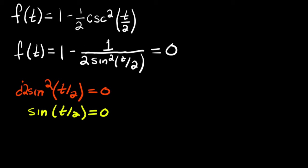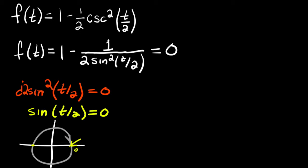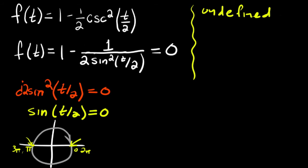Let's think about our unit circle. Sine on the unit circle is the y-value, so it's going to be zero right here, and zero right here — this is pi — and then of course 2 pi, 3 pi, and so on. But the issue is that we have t over 2, so it's undefined when t over 2 is equal to 0, or pi, or 2 pi, and so on.